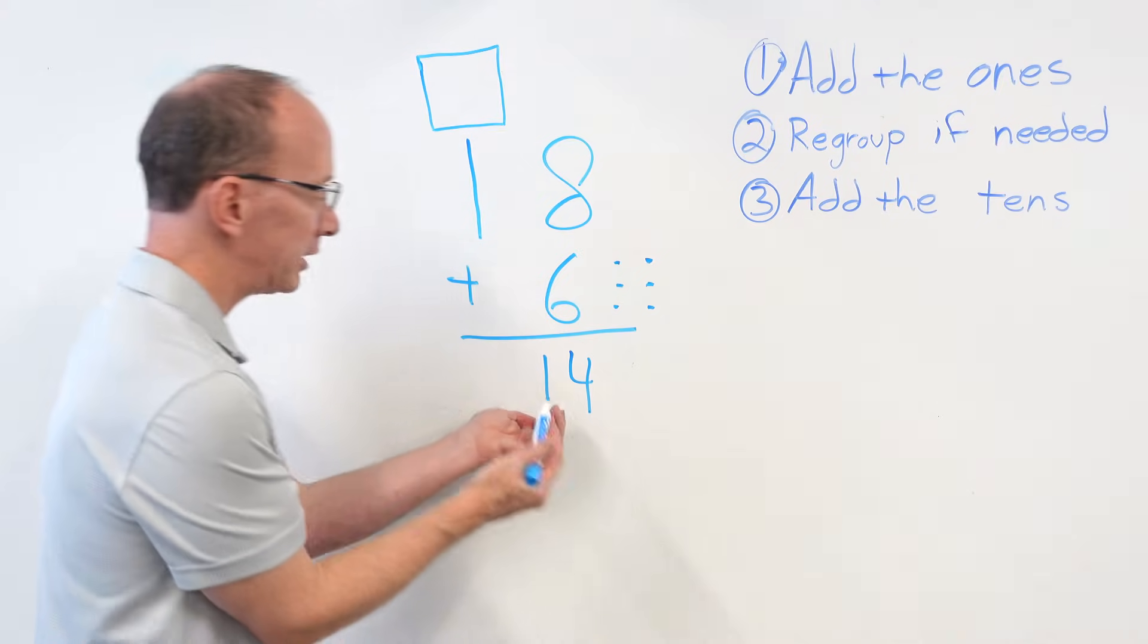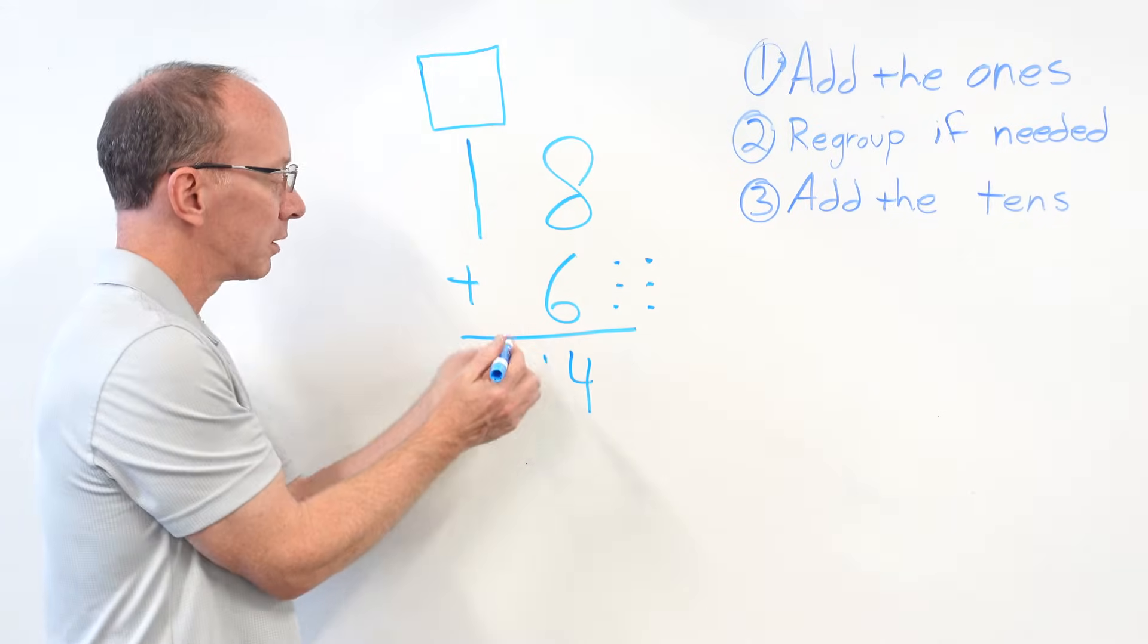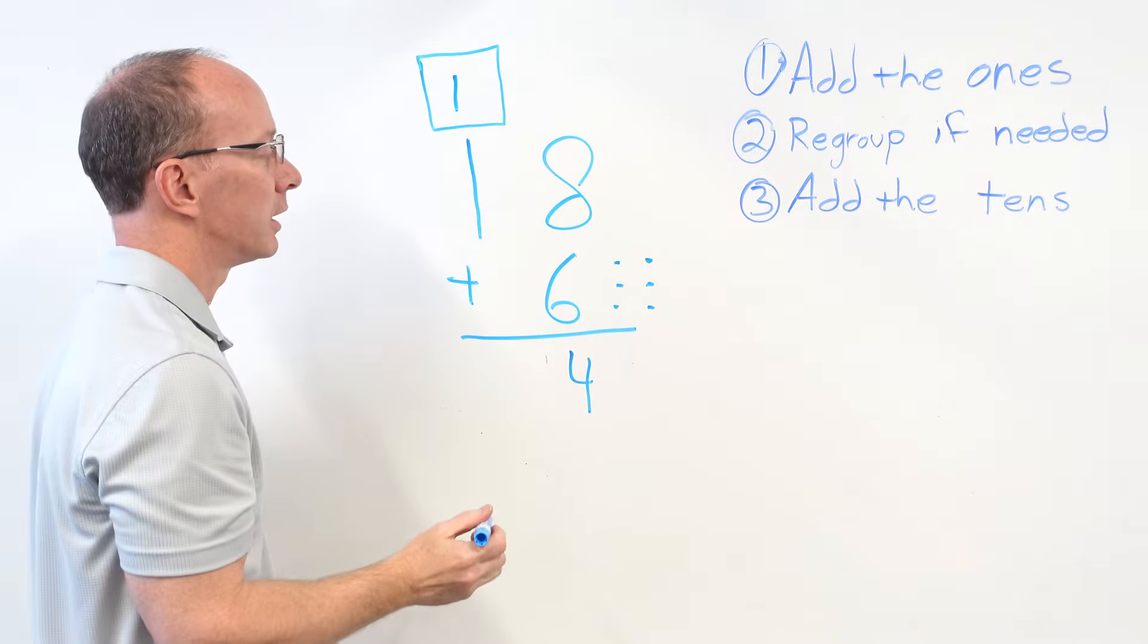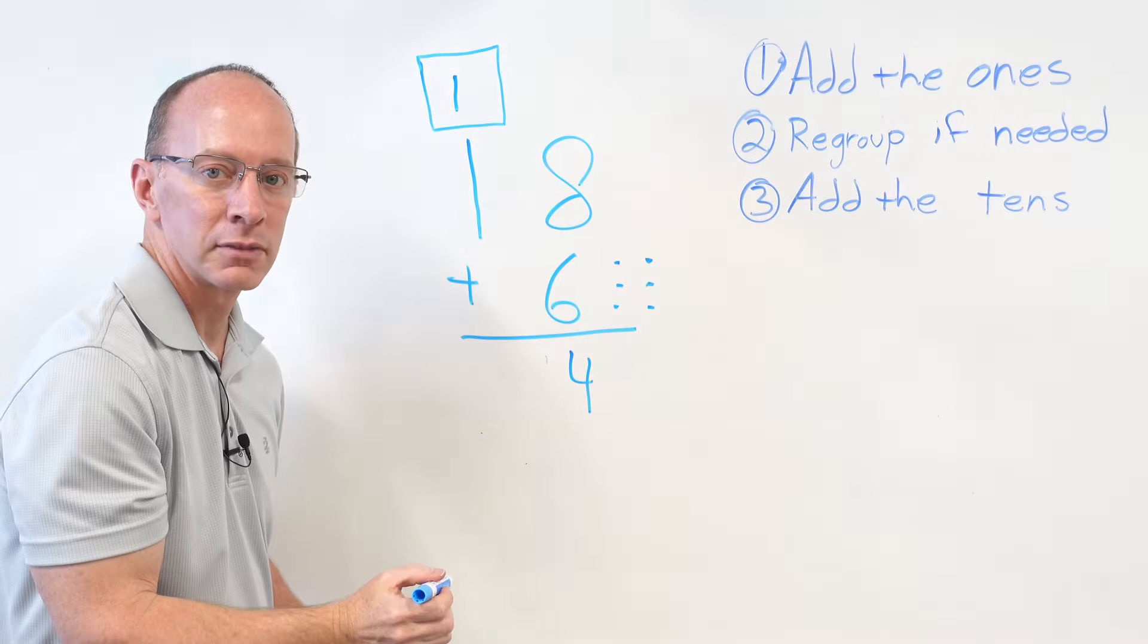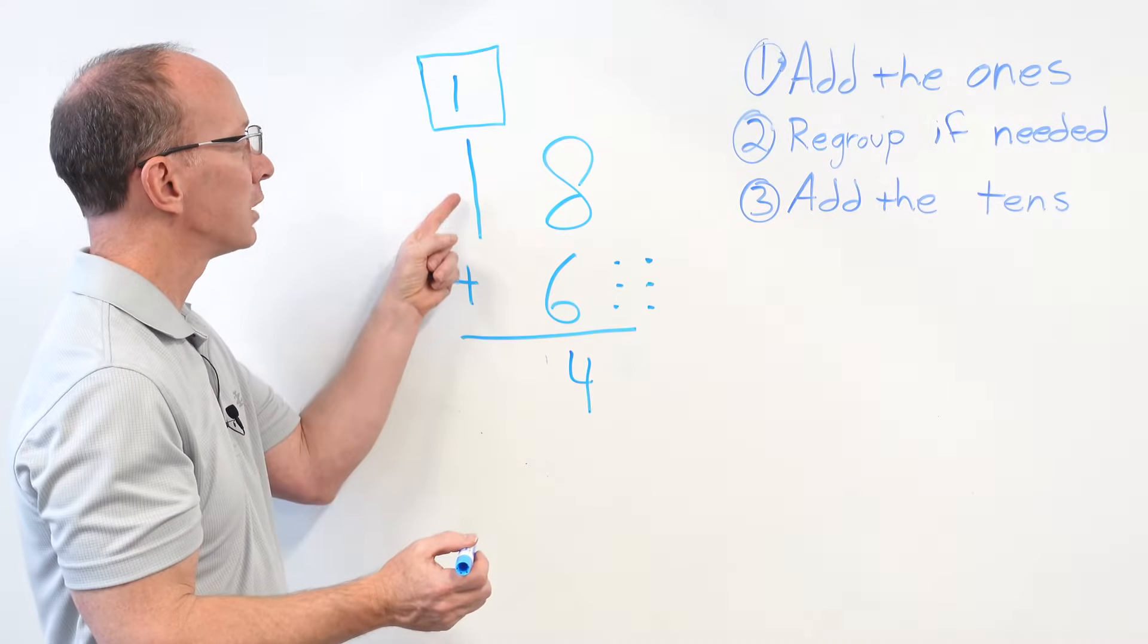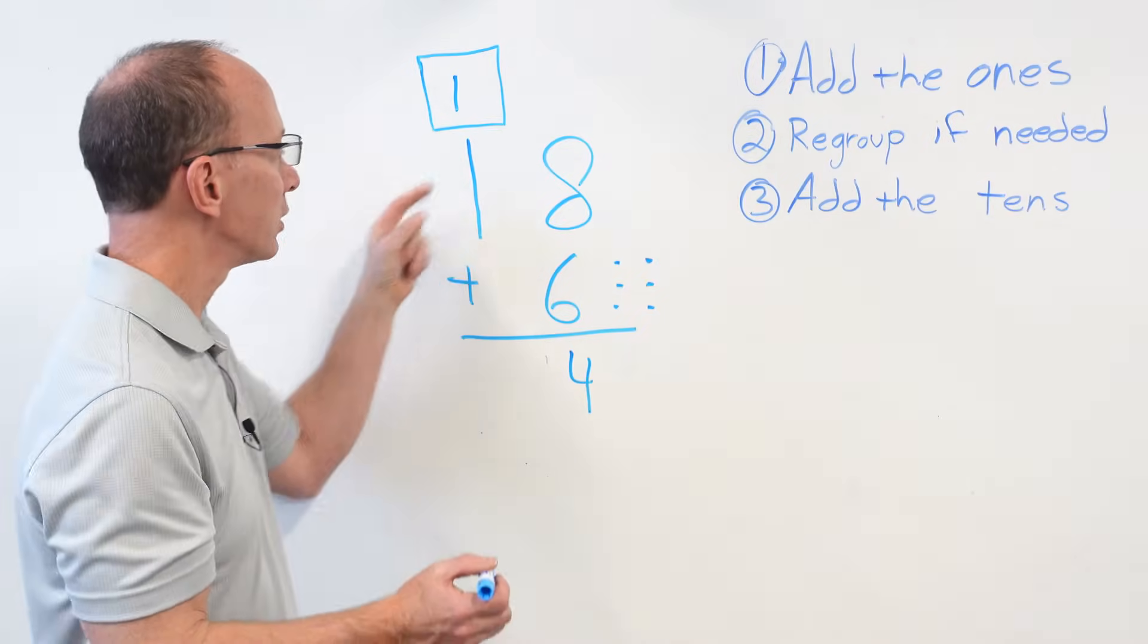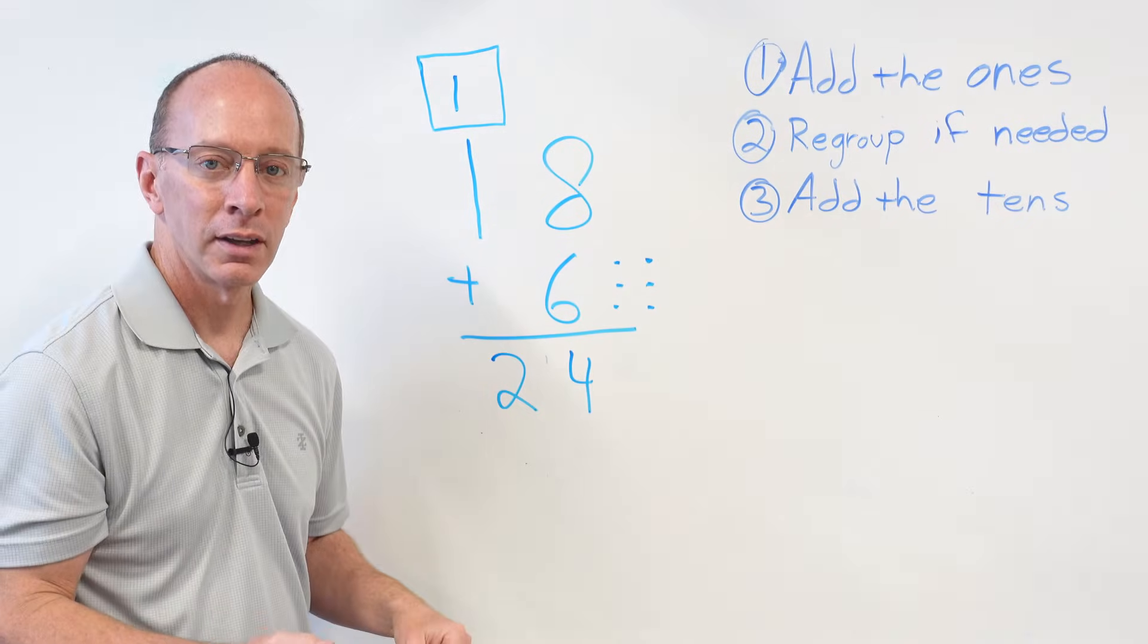So that's like me taking that 1 now that's in the tens place, and I'm going to carry it right up there. I'm going to put that 1 right here. So 8 plus 6 equals 14. Because the 1 was in the tens place, and I put it right here. So then I go 1 plus 1. I'm going to add the tens. That's my third step. 1 plus 1 would be 2.